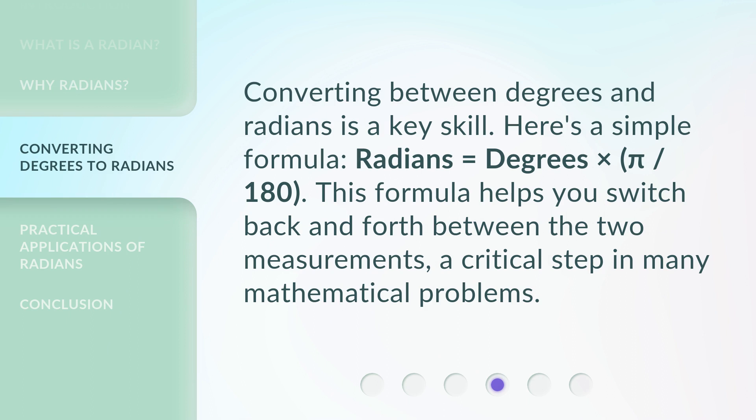Converting between degrees and radians is a key skill. Here's a simple formula: Radians equals Degrees times π divided by 180. This formula helps you switch back and forth between the two measurements, a critical step in many mathematical problems.